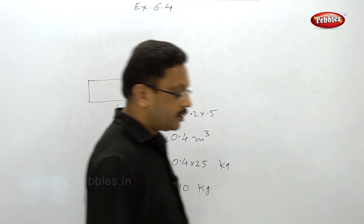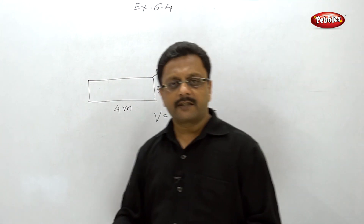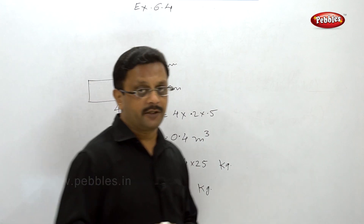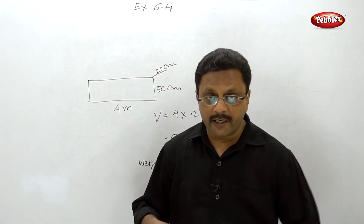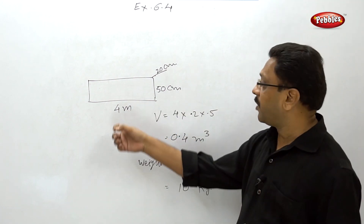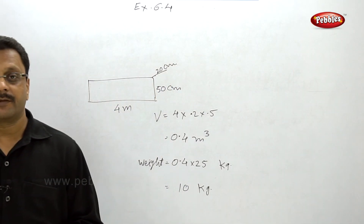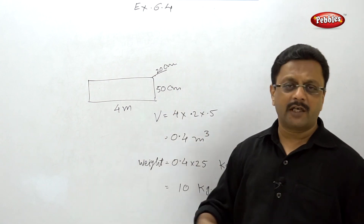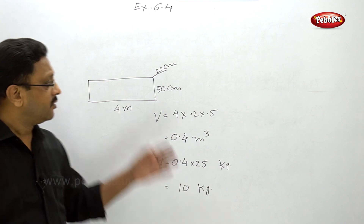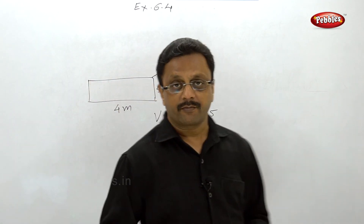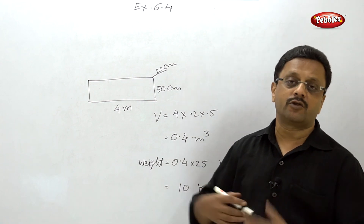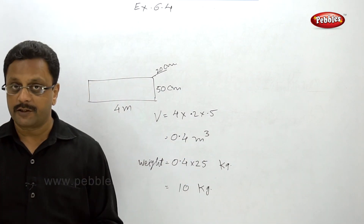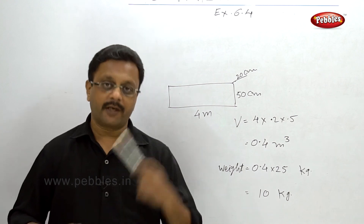Here we finish Exercise 6.4. All examples were very simple — some had different wordings, some were tricky. In the last example the units were not the same; if you don't read carefully you might multiply 4×20×50 and get a wrong answer. Always take care of units. These are simple examples — in exams there will be combinations of solids. We will cover all solid formulas first, then combinations. Thank you very much.